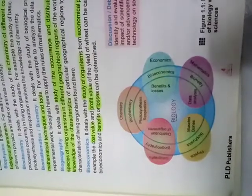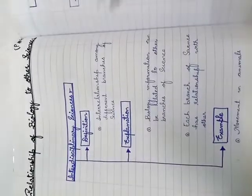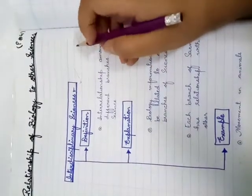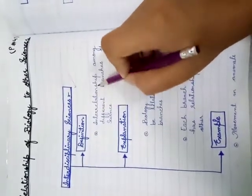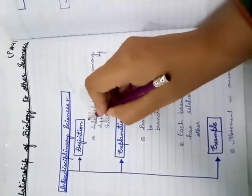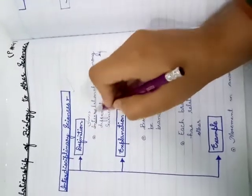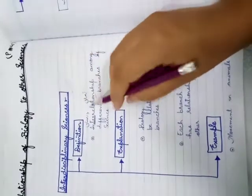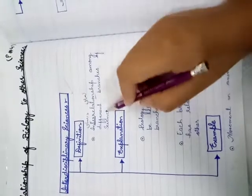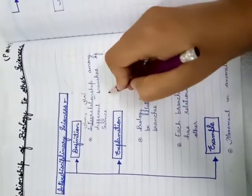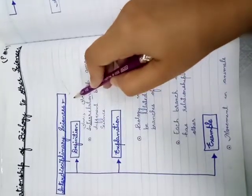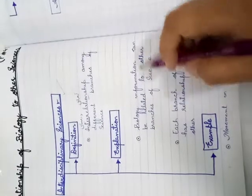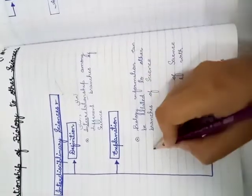Now let's go to the explanation. This is called interdisciplinary sciences. Inter-relationship means the relationship between different branches of science. Biology information can be related to other branches of science.